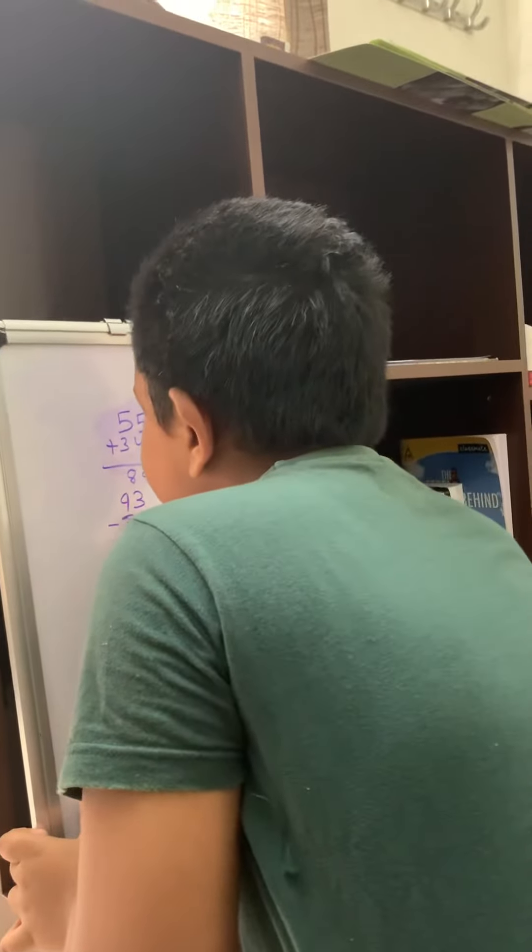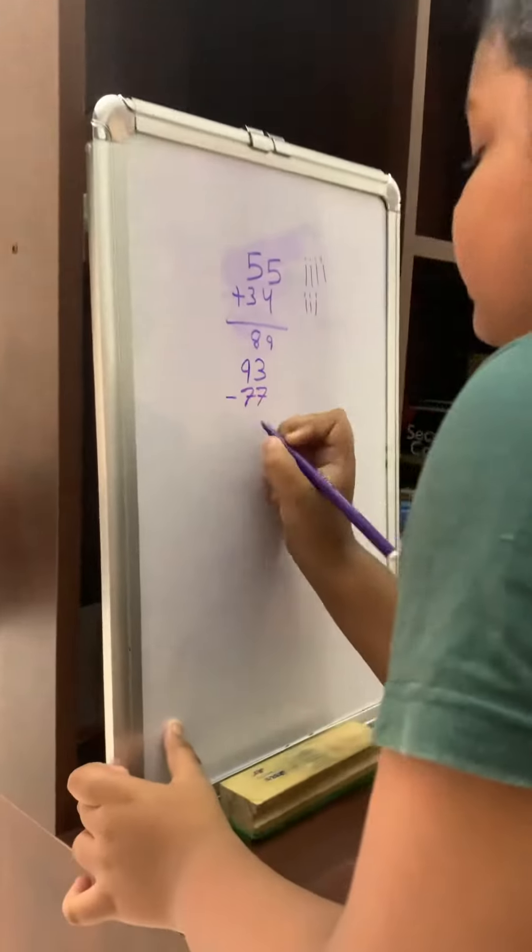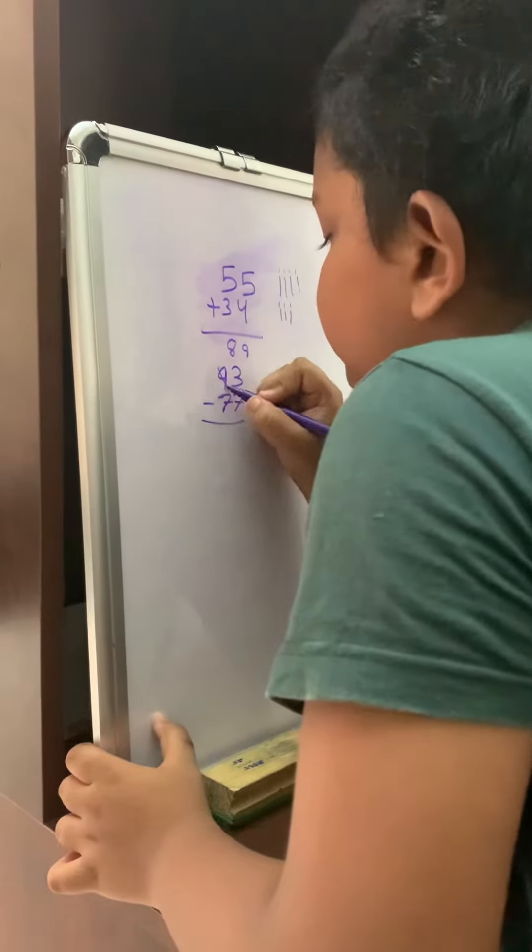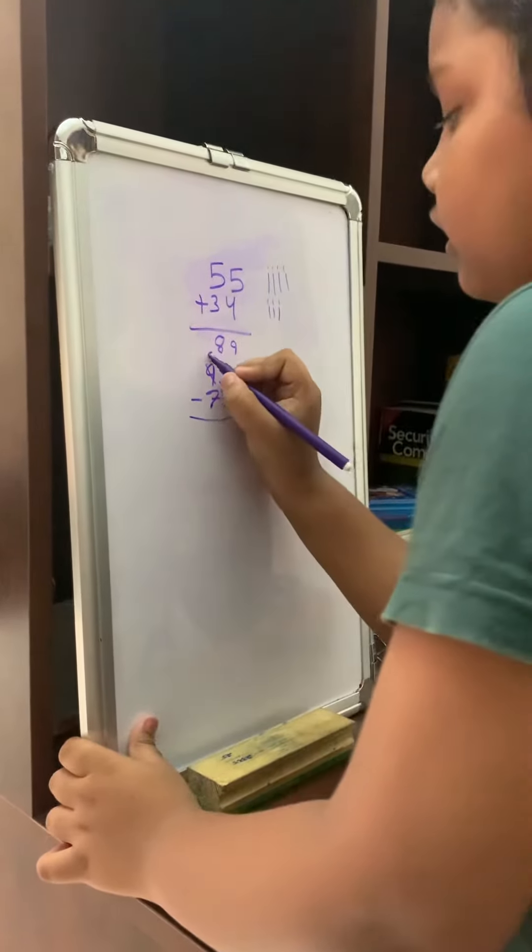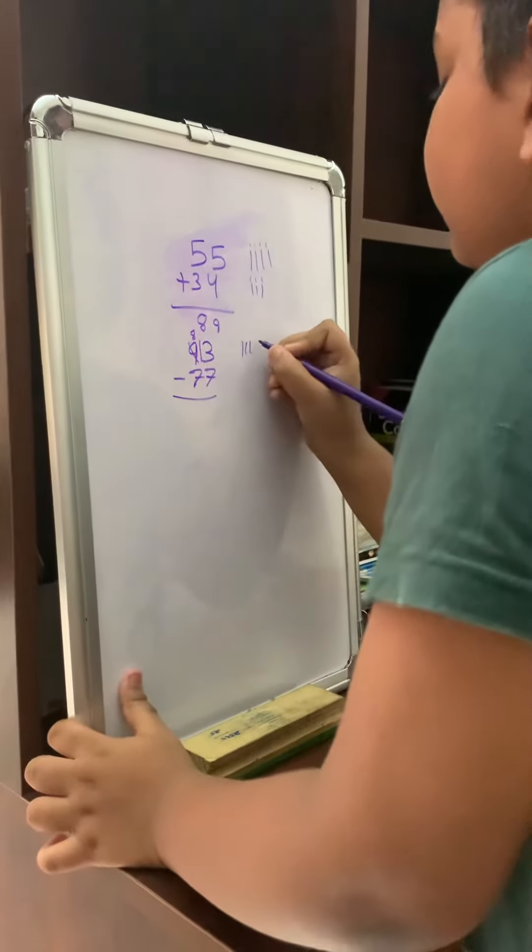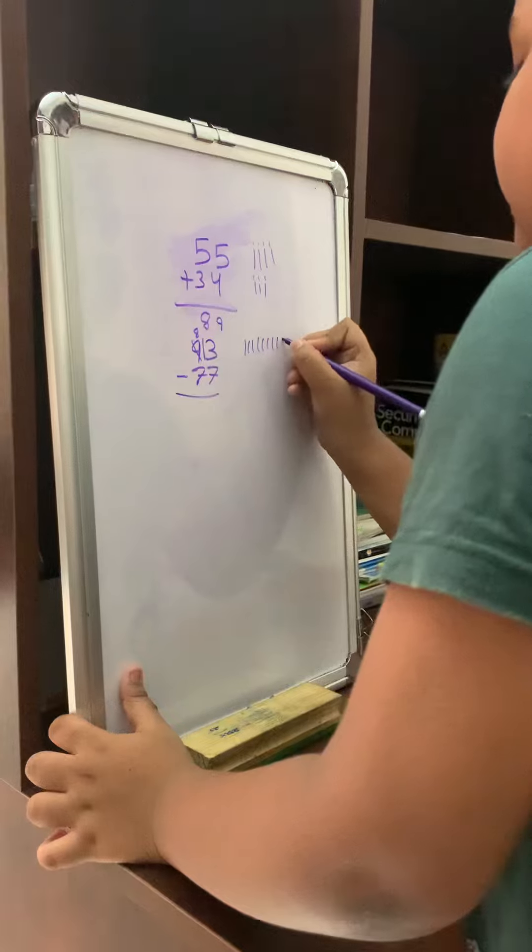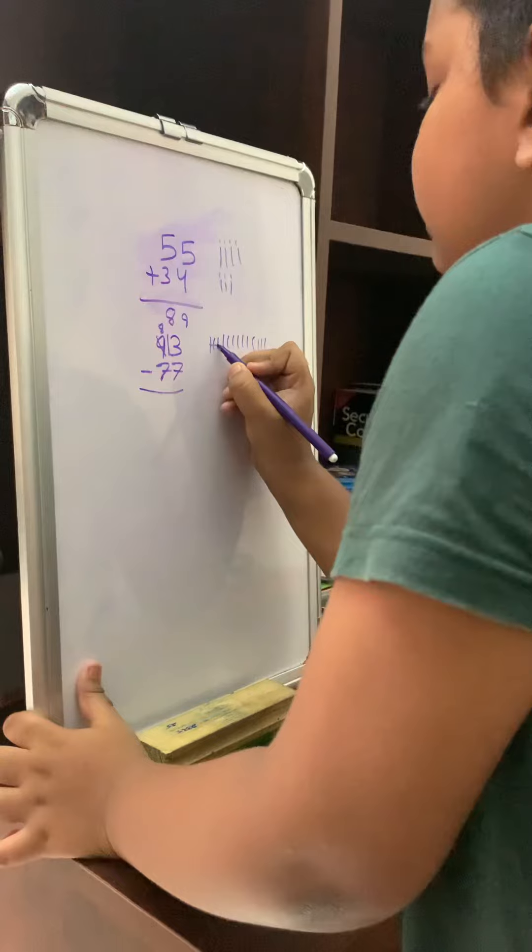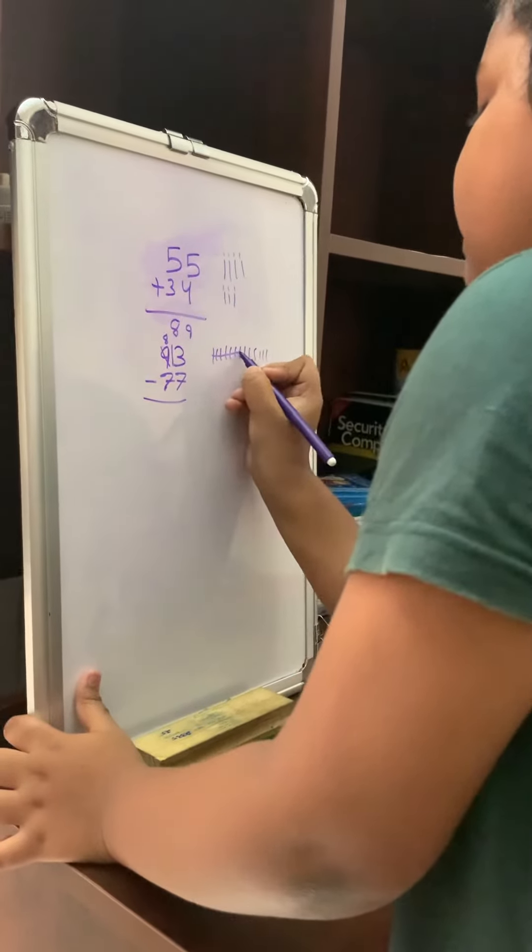93 minus 77. So here, borrowing: 9, 8, 13. Now 13 minus 7. Counting: 1, 2, 3, 4, 5, 6, 7, 8, 9, 10, 11, 12, 13. Counting down: 1, 2, 3, 4, 5, 6, 7.